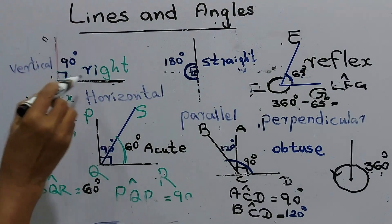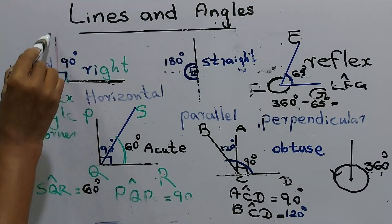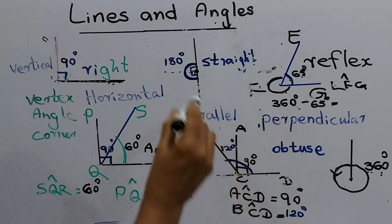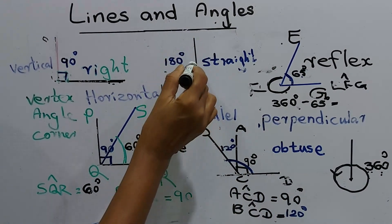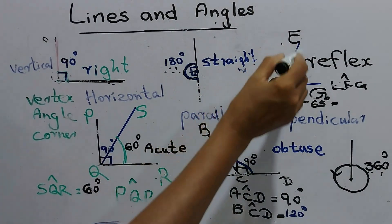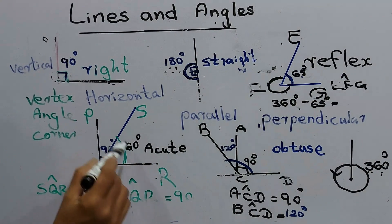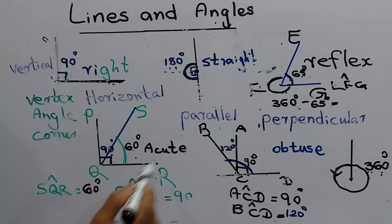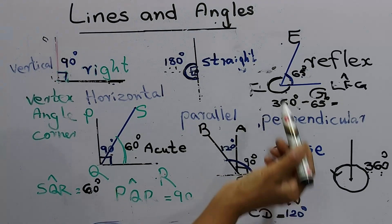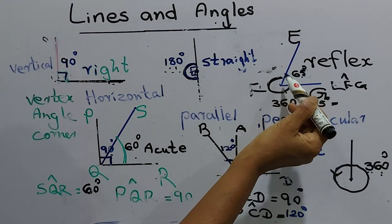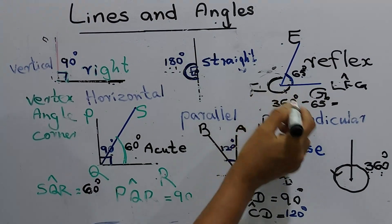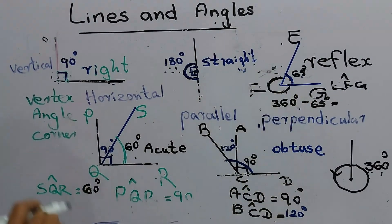Today we learned about lines: horizontal lines, vertical lines, and straight lines, and we learned about parallel lines. A straight angle has a value of 180 degrees. An acute angle is less than 90 degrees. An obtuse angle is more than 90 degrees. A reflex angle is between 180 and 360 degrees. A full turn is 360 degrees.